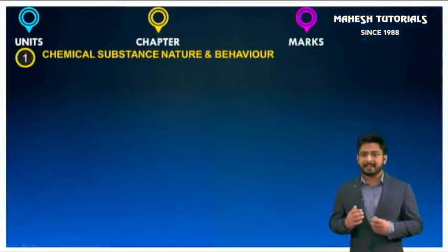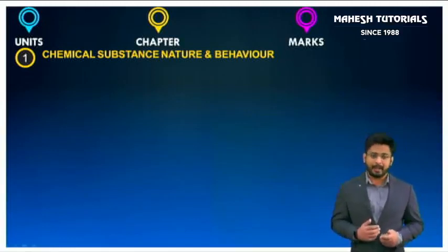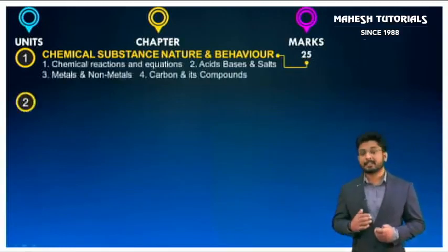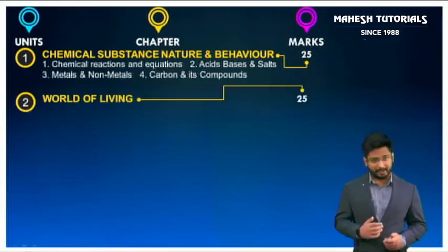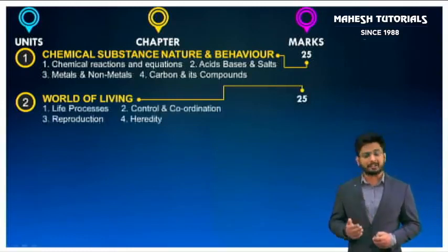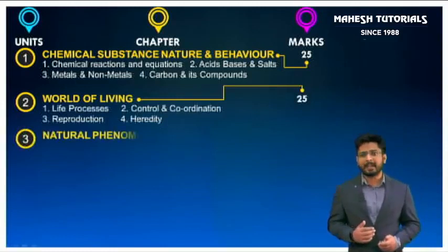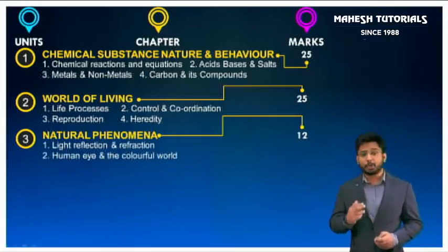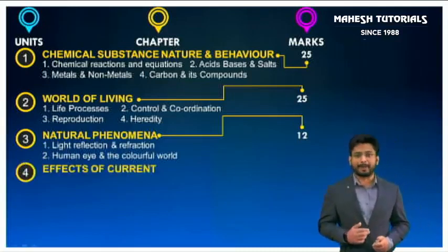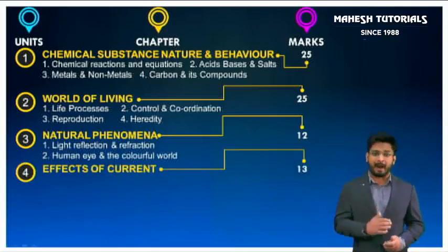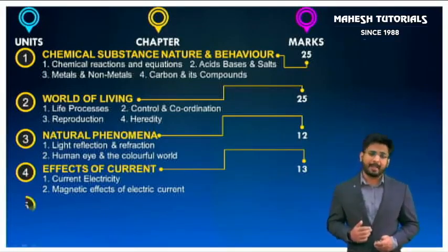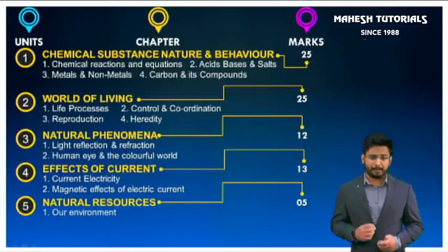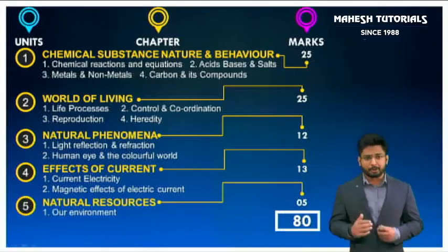The first unit is Chemical Substances — Nature and Behavior, which constitutes 25 marks and has four chapters. The second unit is World of Living, again 25 marks with four chapters. The third unit is Natural Phenomena, which constitutes 12 marks and has two chapters. Effects of Current constitutes 13 marks with two chapters, and Natural Resources constitutes five marks with one chapter, making up the full 80 marks distribution.